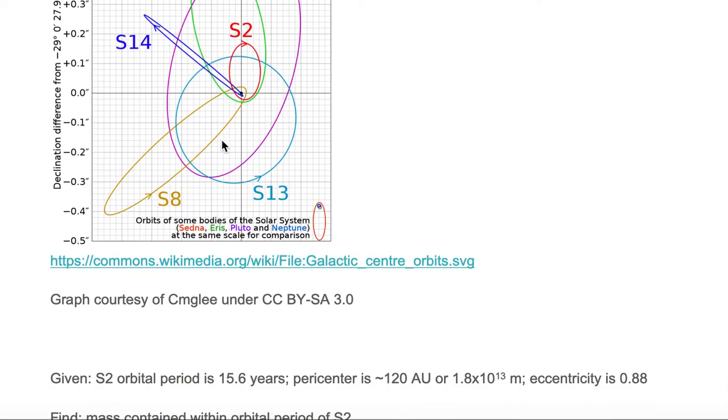S2 has an orbital period of 15.6 years. Its pericenter is around 120 AU or 1.8 times 10 to the 13th meters. The orbit has an eccentricity of 0.88.